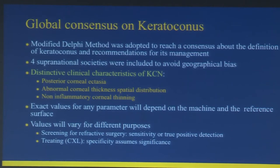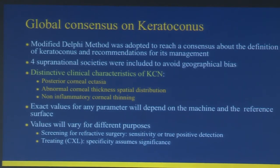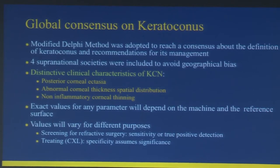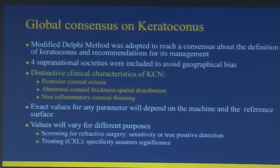Before 2015, when this paper was published, there was no consensus on the diagnosis of keratoconus — no actual definition existed. This extensive work was done through four supranational corneal societies including the Asia Corneal Society and Pan Corneal Society. They agreed on three distinctive clinical characteristics: presence of posterior corneal ectasia, abnormal corneal thickness spatial distribution, and a non-inflammatory corneal thinning condition.